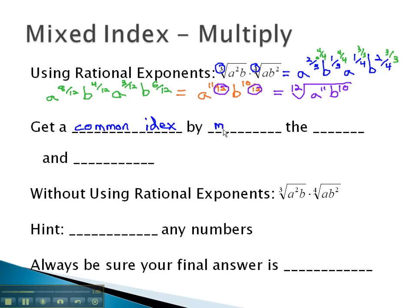And we can get a common index by multiplying by the same thing on top and bottom, or by multiplying the index and the exponent by the same thing. In other words, without using rational exponents, if I wanted an index of 12, we could multiply the first index by 4, and the second by 3.